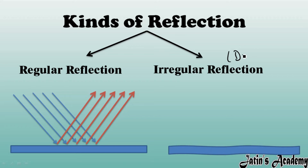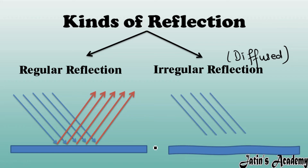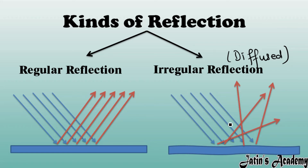Now in irregular reflection — also called diffused reflection — we have an irregular surface. When the same parallel beam of light is incident on an irregular surface, that parallel beam of light will not reflect back in a parallel way.